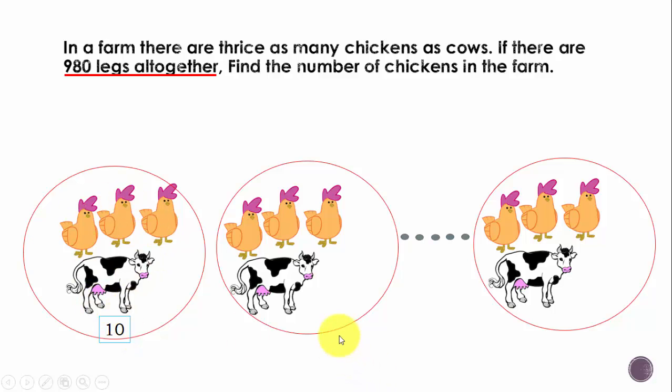What about this group? Also 10. And also 10. So what we have here is that we have a number of groups and for each group there are 10 legs.